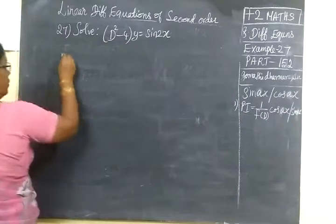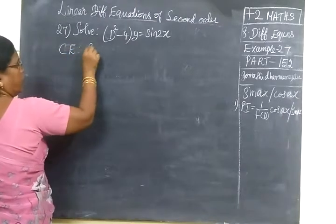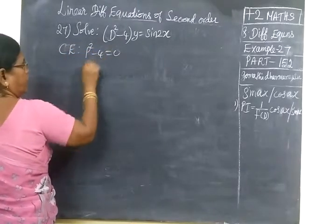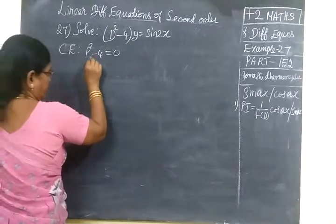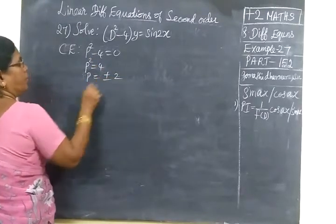First we are finding the characteristic equation: p square minus 4 equal to 0. So p square equal to 4. So p equal to plus or minus 2.